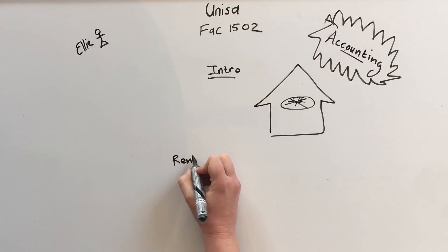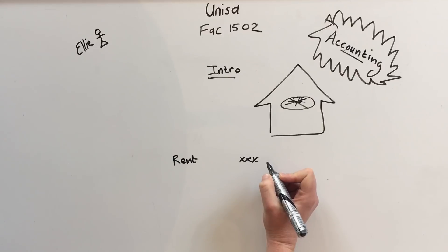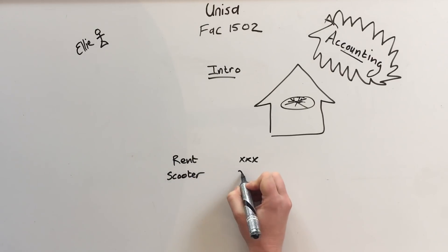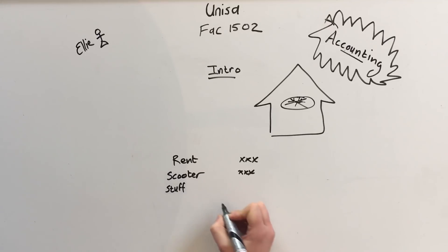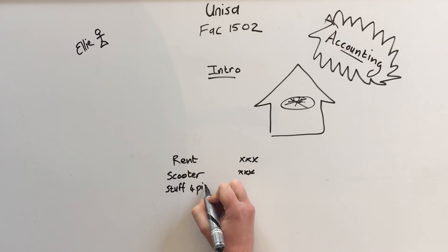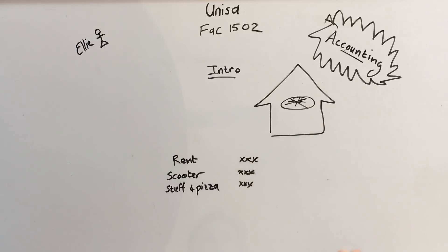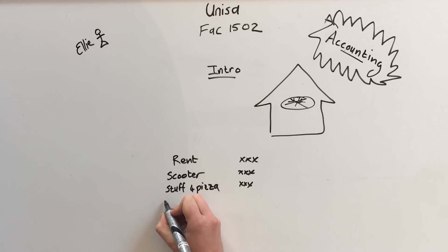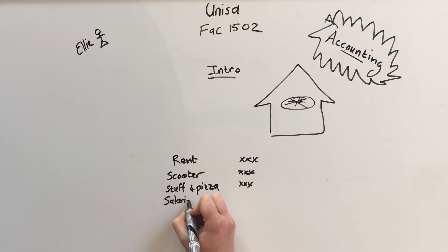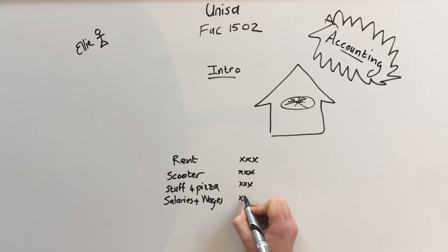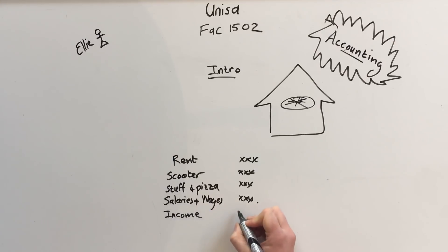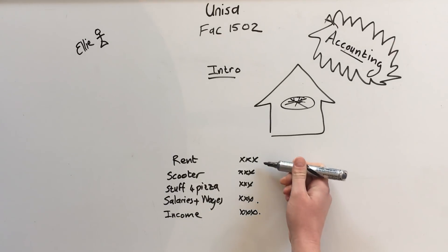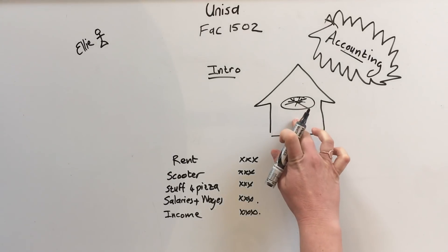We're going to have rent that we will need to pay. We're going to need a scooter to deliver the pizza. We're going to need ingredients — stuff to make pizza with. We'll probably have a driver for the scooter, so let's call this salaries and wages. And if we're really lucky, somebody's going to buy our pizza and we will have income. These are typical things we will be recording for our pizza shop.